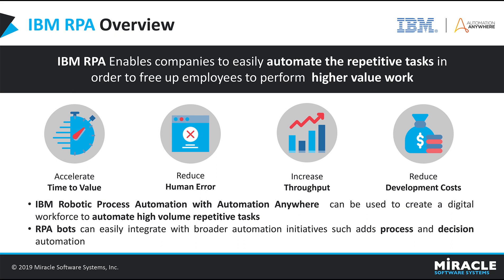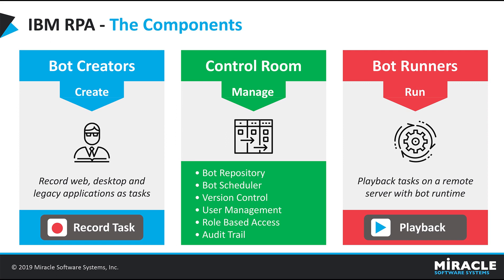Now let us see what components are required to work with IBM RPA. There are three very important components: Bot Creators, Control Room, and Bot Runners. The Control Room provides the current status of your environment — how many tasks are scheduled, how many tasks have been pushed into the Control Room. Bot Creators is used to create your bots by recording or by writing logic. Bot Runners is used to run your bots by scheduling them at a particular time.